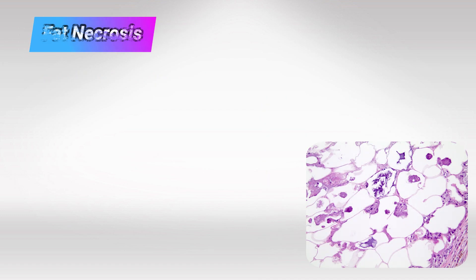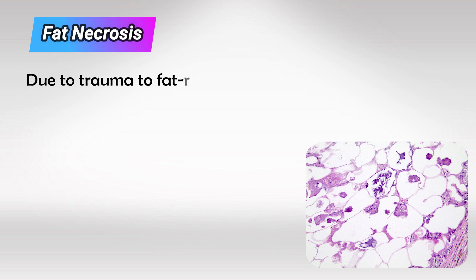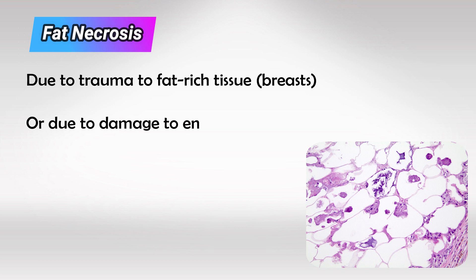The next type we have is fat necrosis. In this type, we have fat cells that have simply died. This can be the result of trauma or non-trauma. The non-traumatic is most likely enzymatic. Trauma most commonly affects areas that are very rich in fat, such as the breasts, and the non-traumatic mostly occurs in areas rich with enzymes, such as the pancreas.